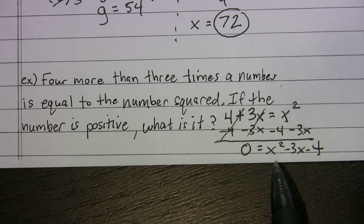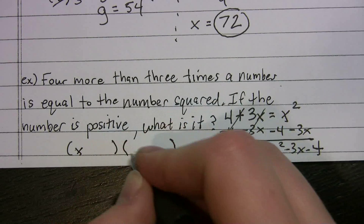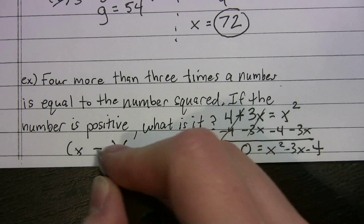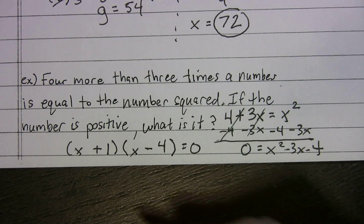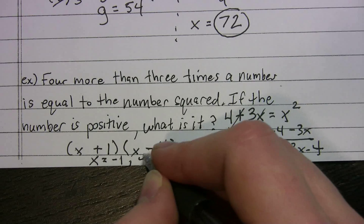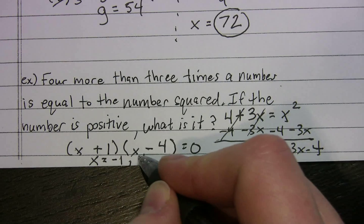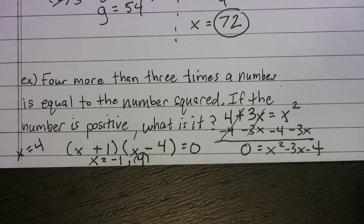We need to factor X² − 3X − 4. Setting up the double bubble, we get (X − 4)(X + 1). Setting each factor equal to zero gives X = 4 and X = −1. Since the problem says the number is positive, the answer is X = 4.